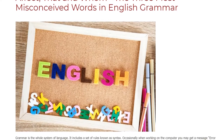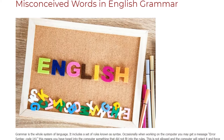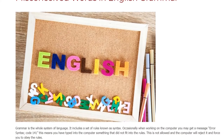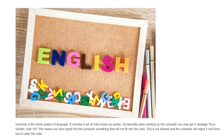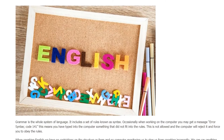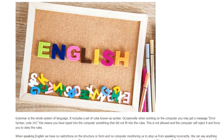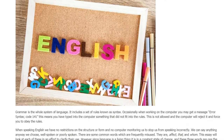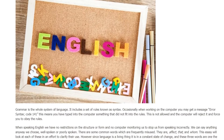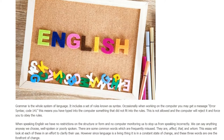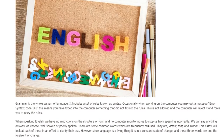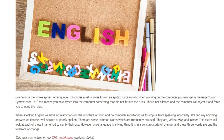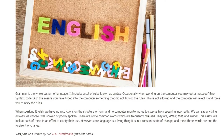Grammar is the whole system of language and includes a set of rules known as syntax. Occasionally when working on a computer you may get a message: error syntax code 141, meaning you have typed something that did not fit the rules. The computer will reject it and force you to obey the rules. When speaking English we have no such restrictions — no computer monitoring us — so we can say anything any way we choose, well spoken or poorly spoken.